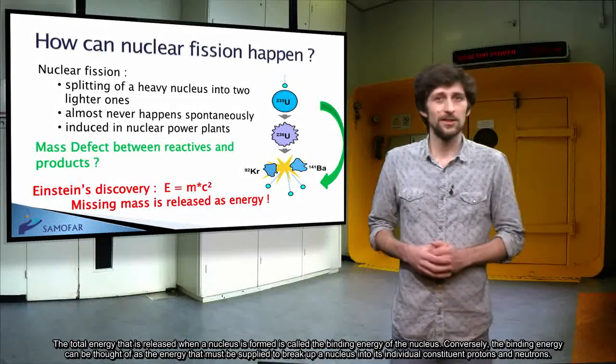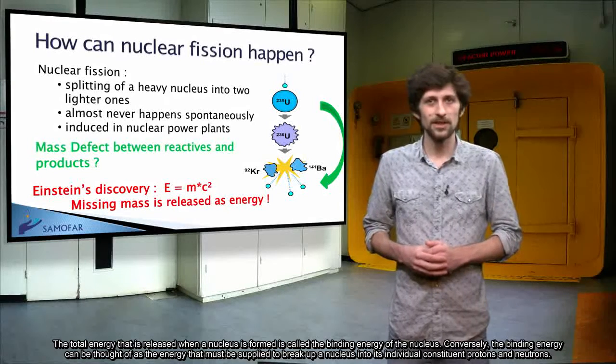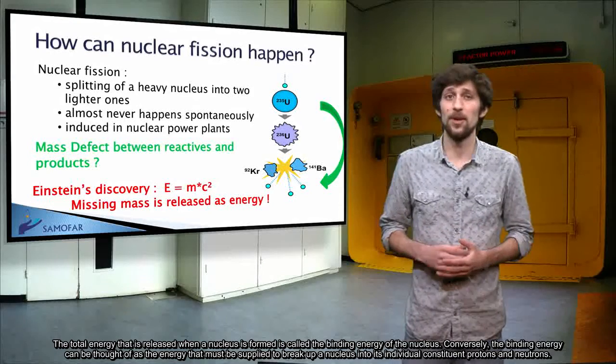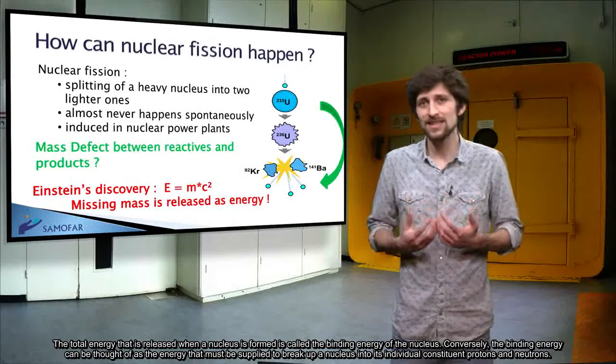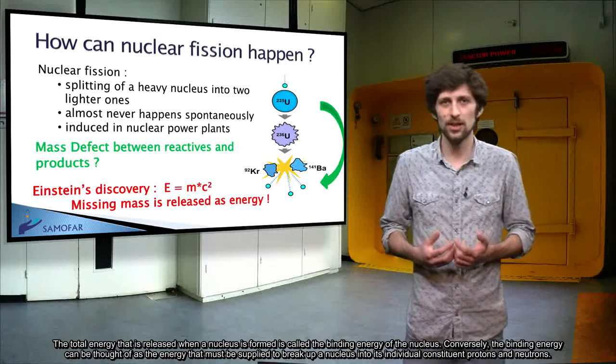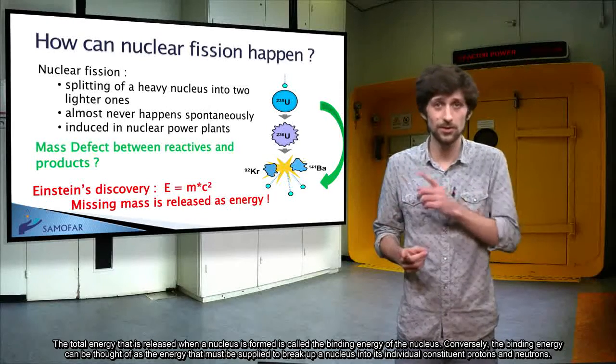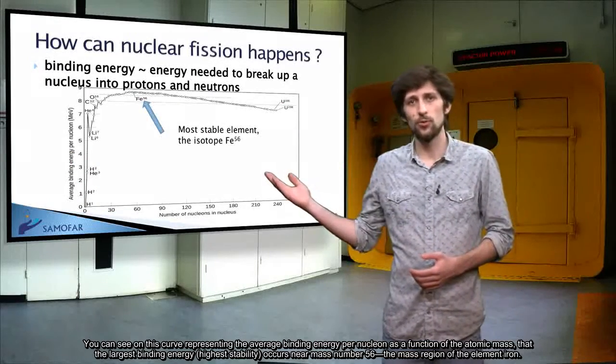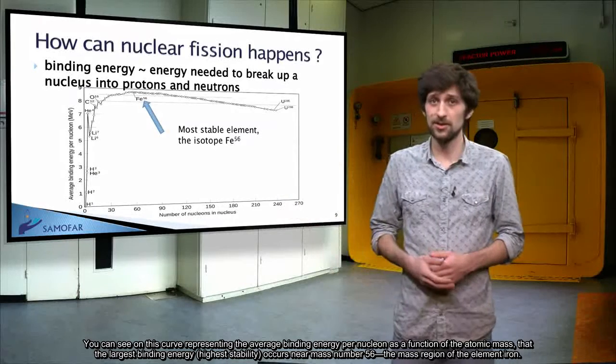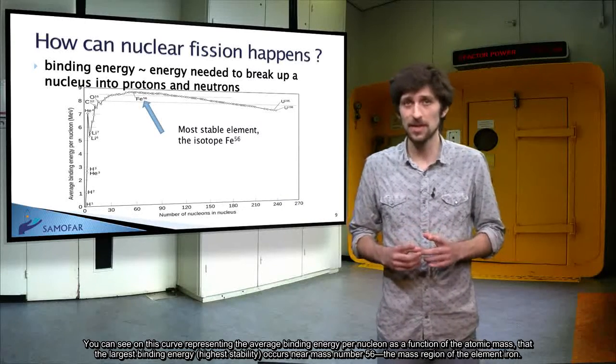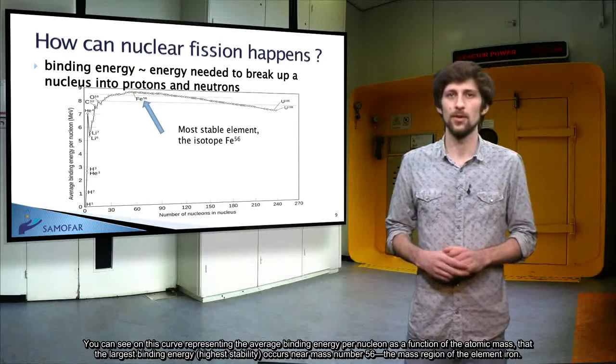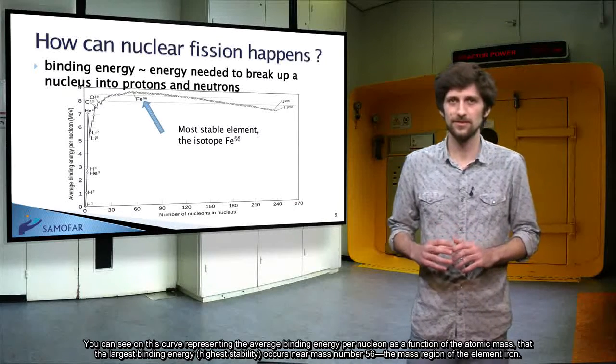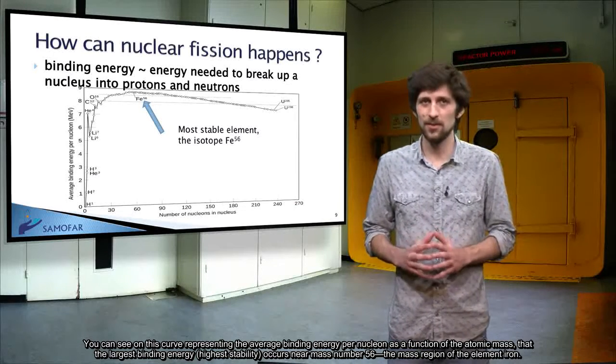The total energy that is released when a nucleus is formed is called the binding energy of the nucleus. Conversely, the binding energy can be thought of as the energy that must be supplied to break up a nucleus into its individual constituent protons and neutrons. You can see on this curve, representing the average binding energy per nucleon as a function of the atomic mass, that the largest binding energy, which means the highest stability, occurs near mass number 56, the mass region of the element iron.